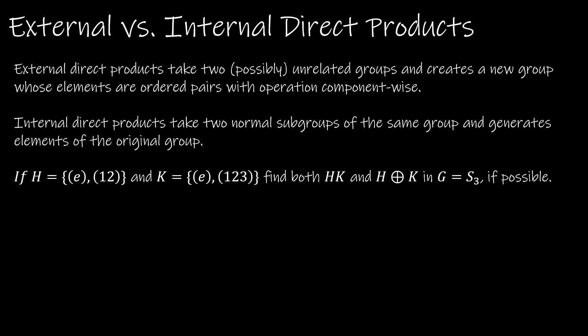We can see that there's a difference between an external and internal direct product. An external direct product gives us ordered pairs, and it takes any two possibly unrelated groups. So if I really wanted to, I could let H be {e, r}, and I could let K be {e, (1,2), (2,3)} from S₃.